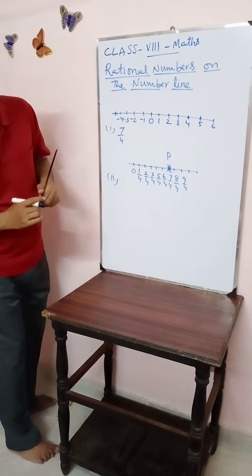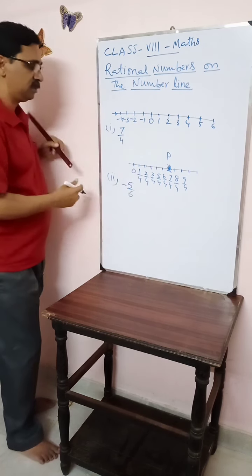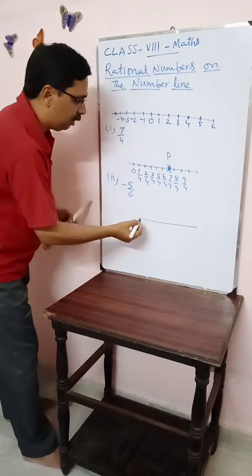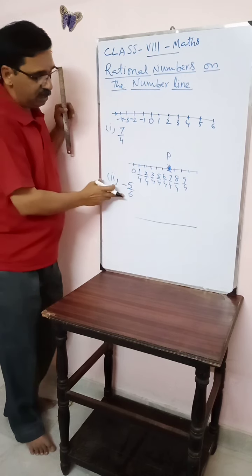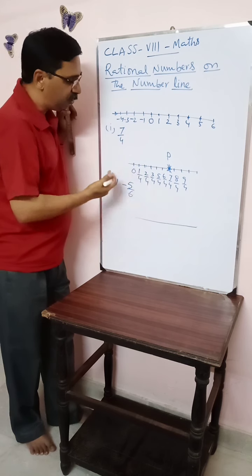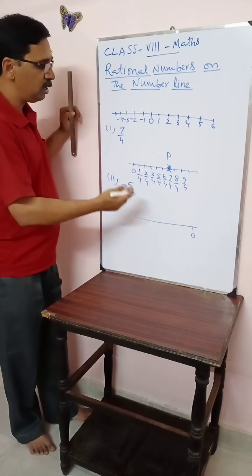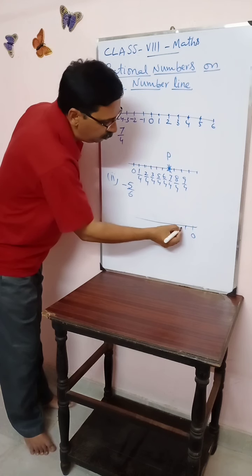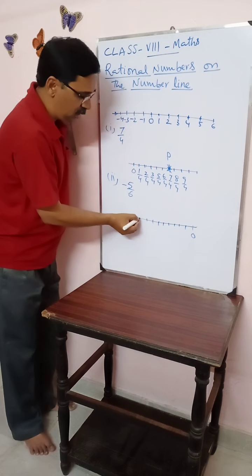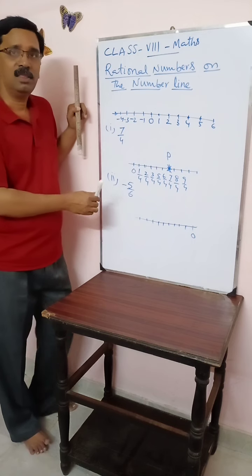Next, let us take a negative number. The number given here is minus five by six. We draw a line again. This is a negative number, so towards the left of zero we have to represent it. We represent zero here first, and mark unit distances: zero, one, two, three, four, five, six, seven, eight, nine. The denominator here is six.